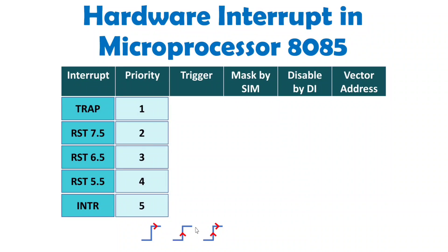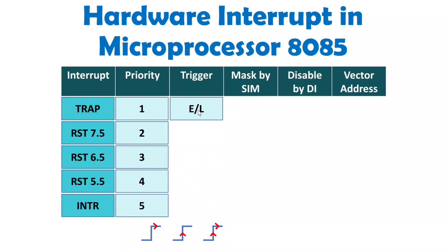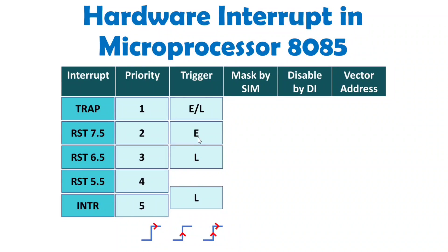TRAP has the highest priority, so TRAP should get triggered with edge as well as level — in any situation, TRAP must be serviced. With microprocessor 8085, there is only one interrupt which is edge triggered: RST 7.5. RST 7.5 is only edge triggered. RST 6.5, RST 5.5, and INTR are level triggered.